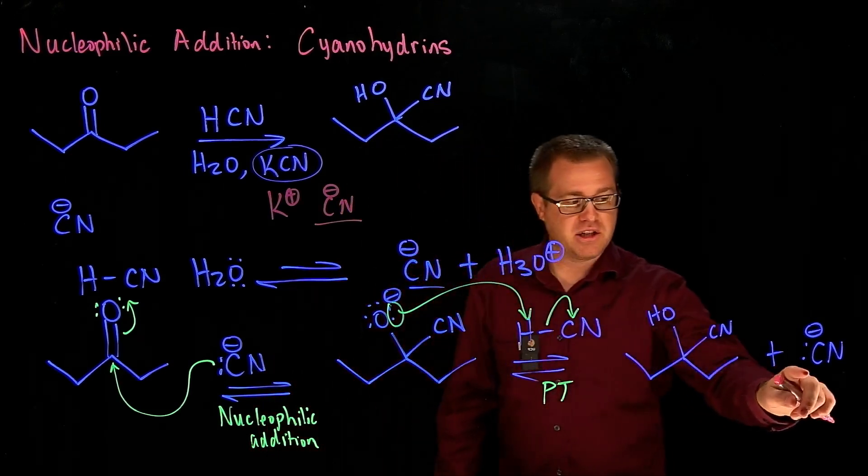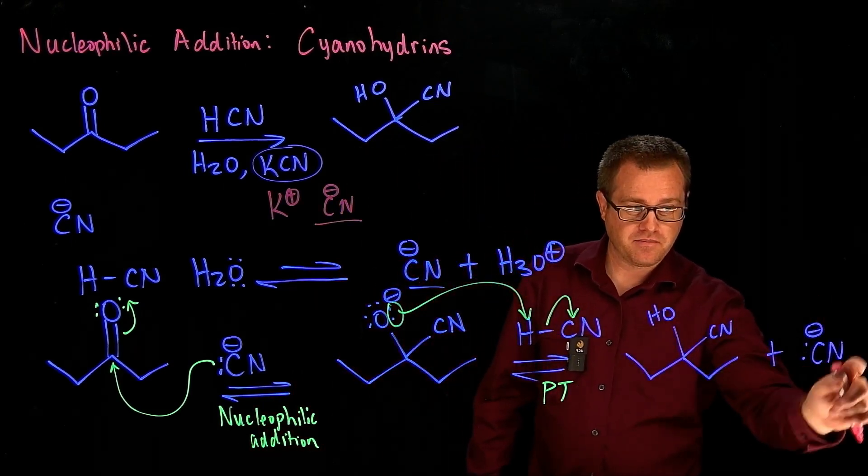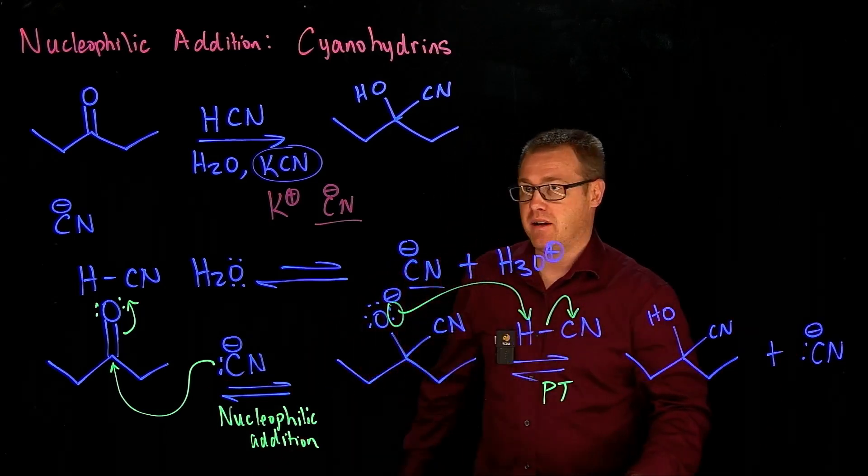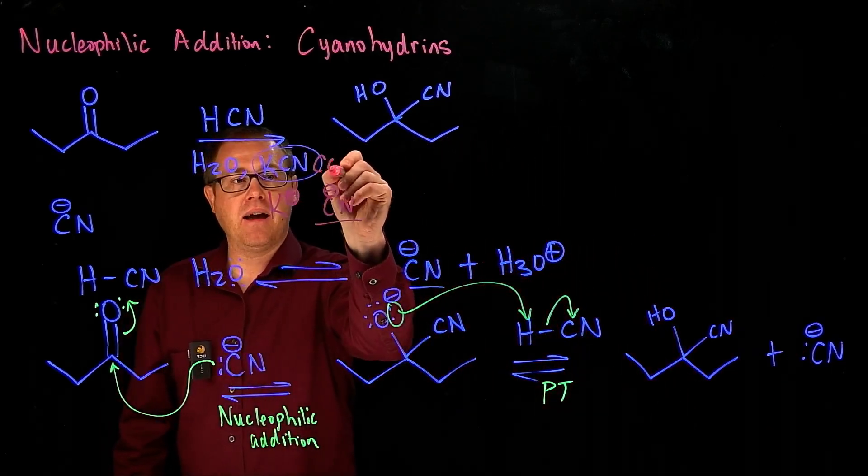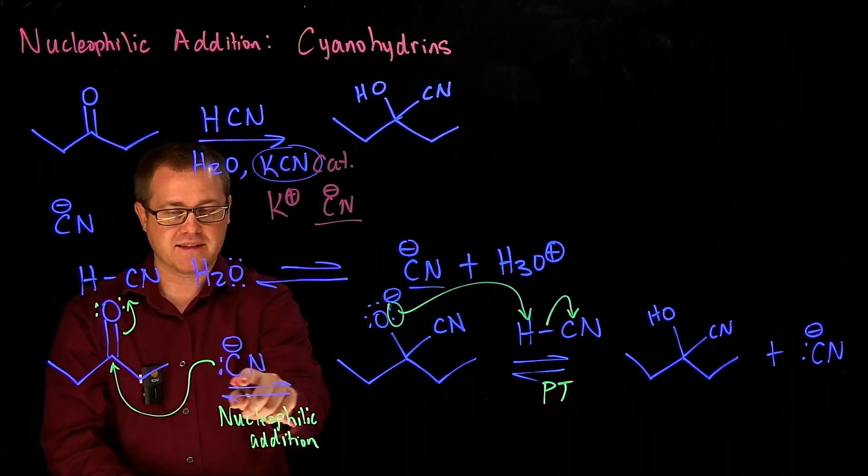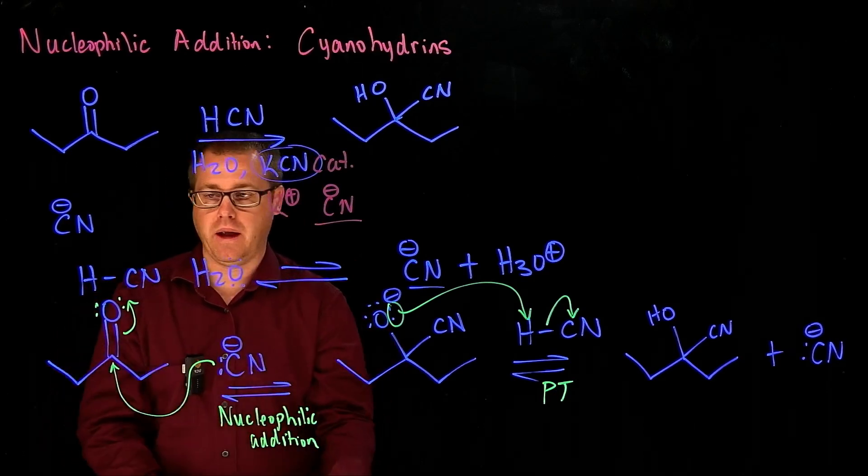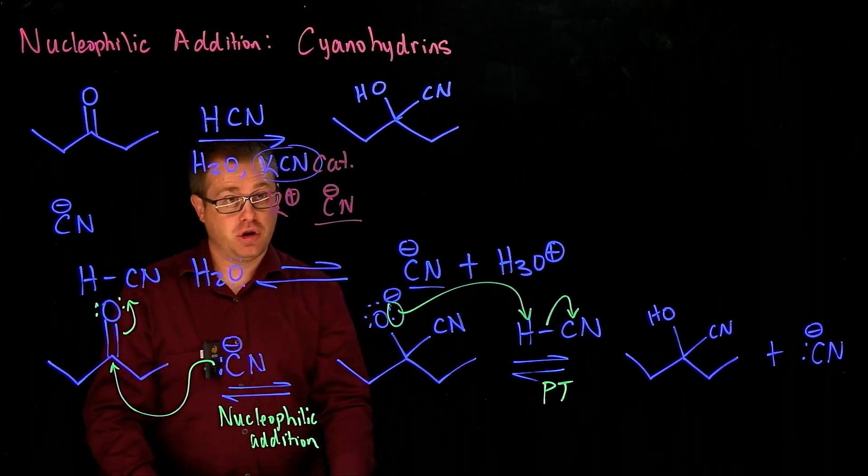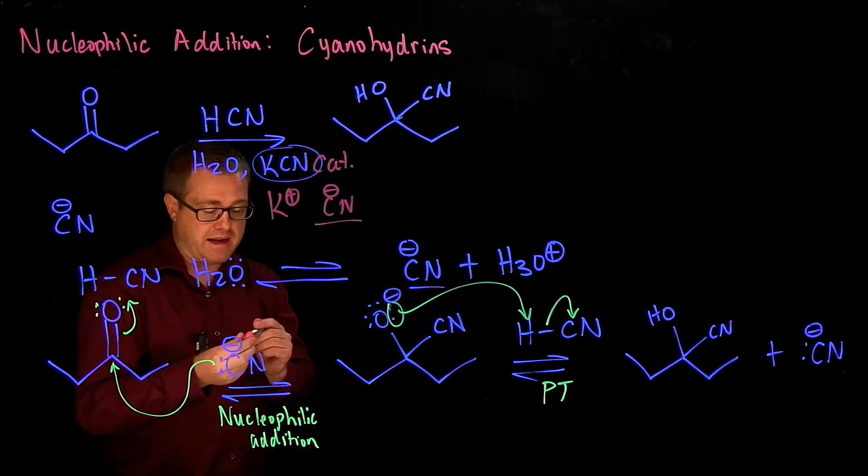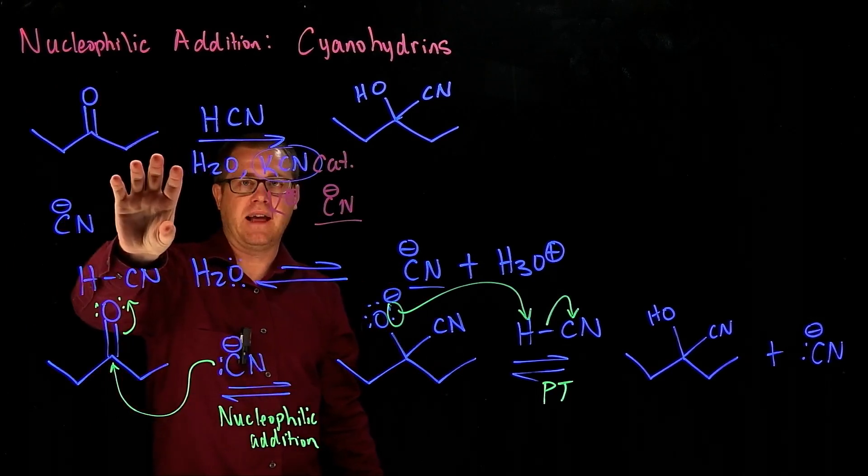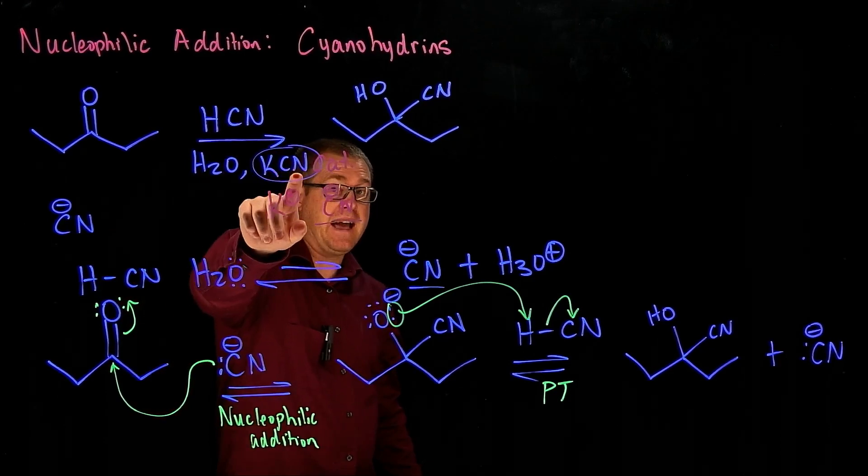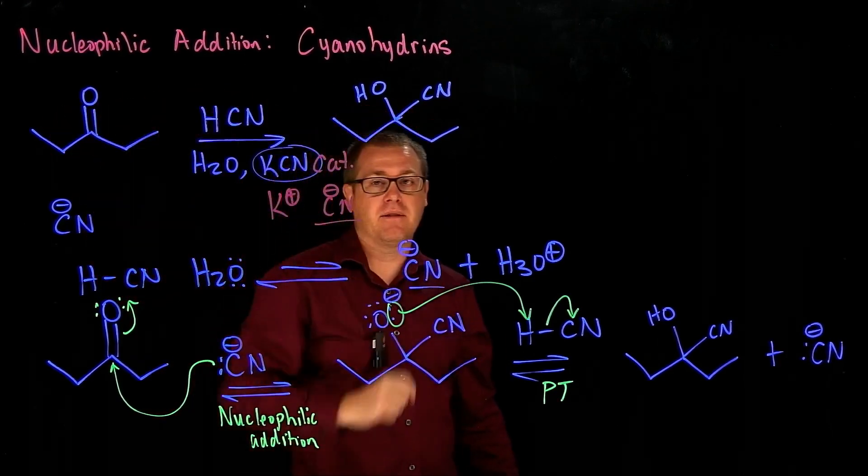But at the end of the reaction, do you see how we would regenerate more of our cyanide when you look at the mechanism here? So when you add a catalytic amount of your potassium cyanide, you're generating more of this to get the reaction going. Another thing that you could do, so let's back up. So those are perfect conditions to make this reaction happen. Our hydrocyanic acid, some water, and potassium cyanide in catalytic amounts. That will get the reaction to go.